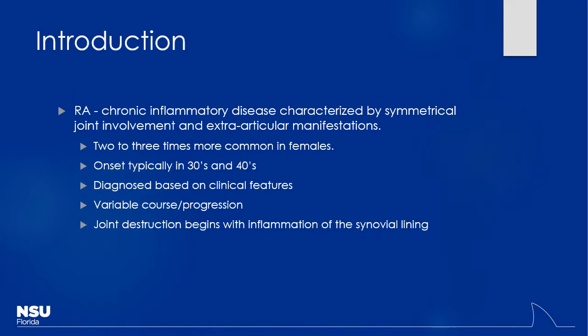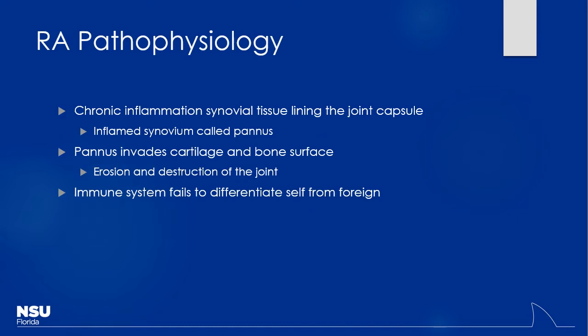Typically, how do you diagnose RA? It's based off symptomatology — patients are going to be complaining. Sometimes it's hard to catch it super early, and in those cases, it's important because we want to try to save those joints as long as we can. Once you lose that synovial lining, it's hard to get that back.